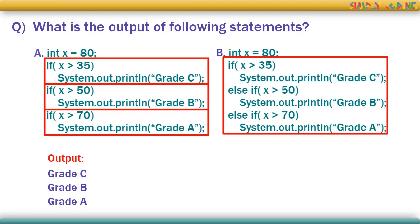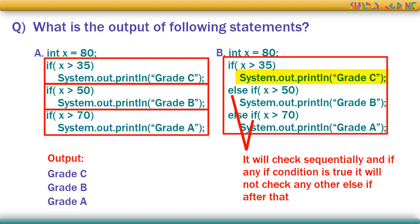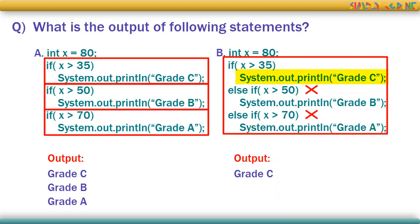The second piece of code is an if-else ladder with only one if block. In an if-else ladder, only the first matching condition is executed. Here the first condition is true, so it prints grade C. It does not go and check all else-if conditions — it checks only until the first matching if and then exits the if-else block. So even though conditions are true for all else-if, once the first if matches, it executes that block and exits. Only grade C will be printed.